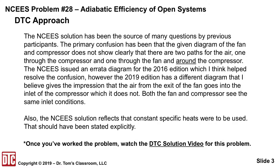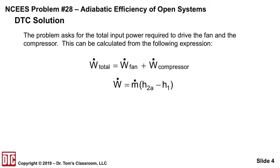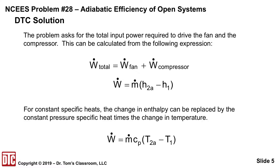The NCEES solution reflects that constant specific heats were used, but that should have been stated explicitly and it was not. The problem asks for the total input power required to drive both the fan and the compressor. That can be calculated from the sum of the power: W-dot of the fan plus W-dot of the compressor, where W-dot equals M-dot times the difference in enthalpies, H2A minus H1. However, for constant specific heats, the change in enthalpy can be replaced by the constant pressure specific heat times the change in temperature, Cp delta-T.